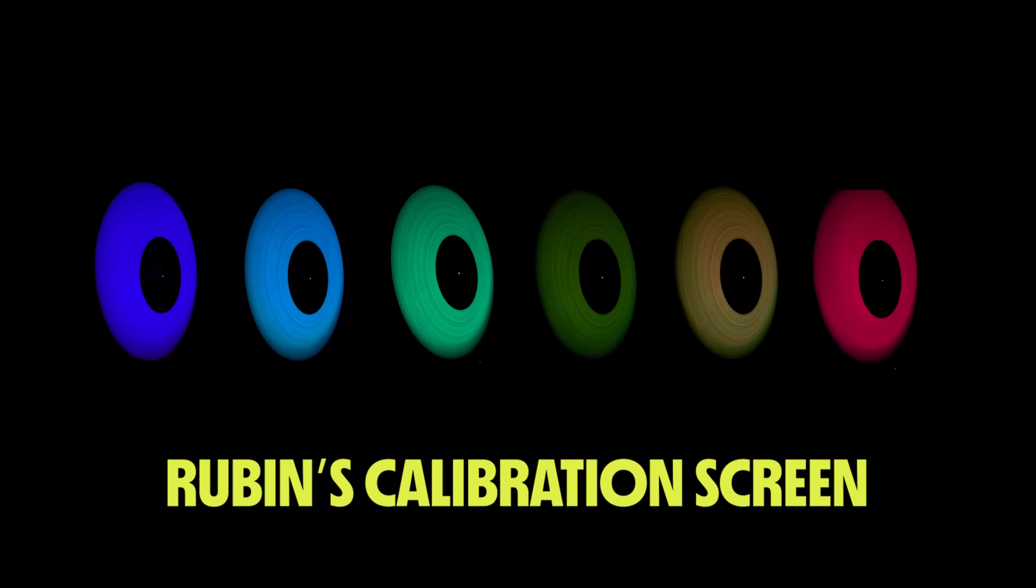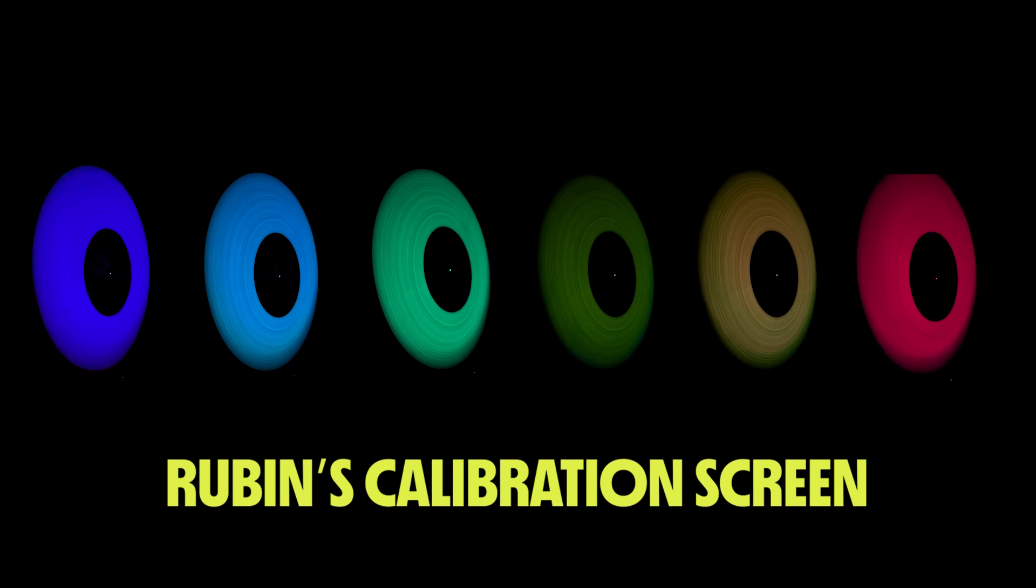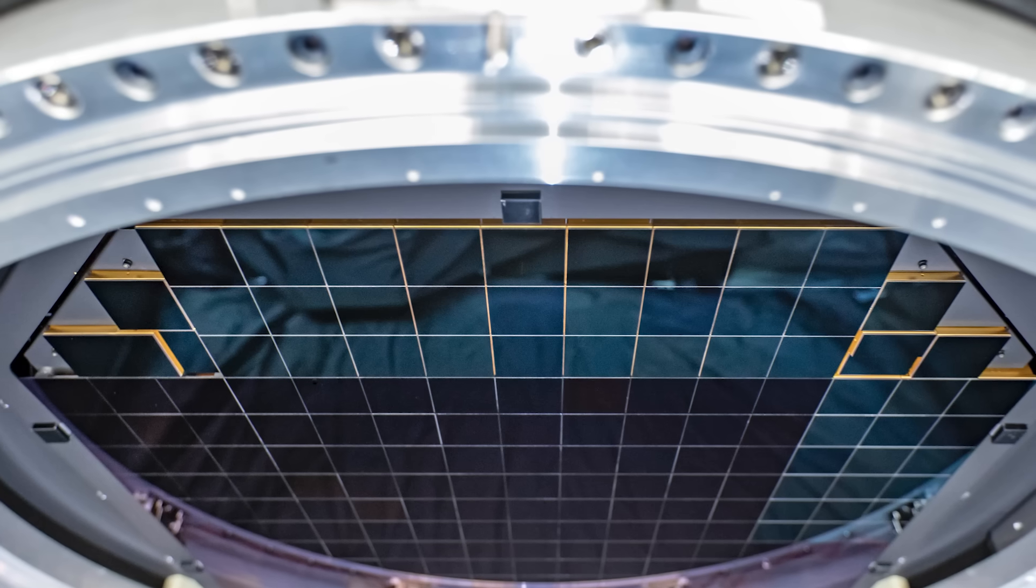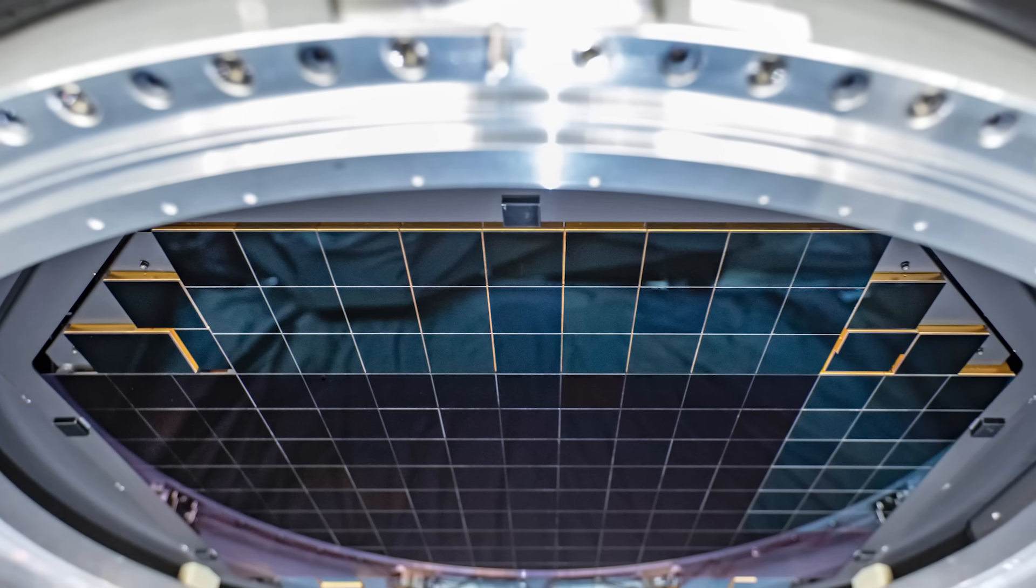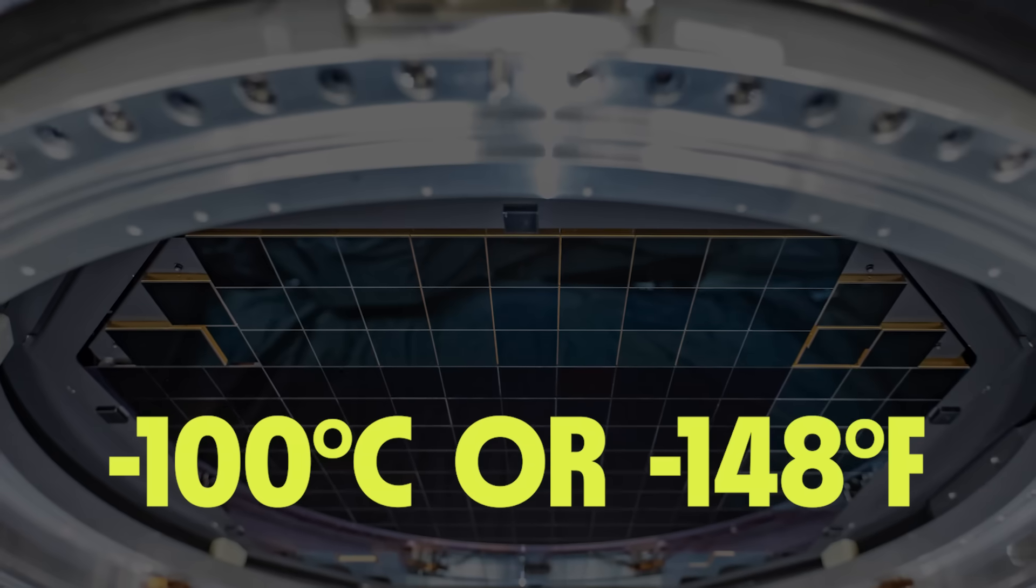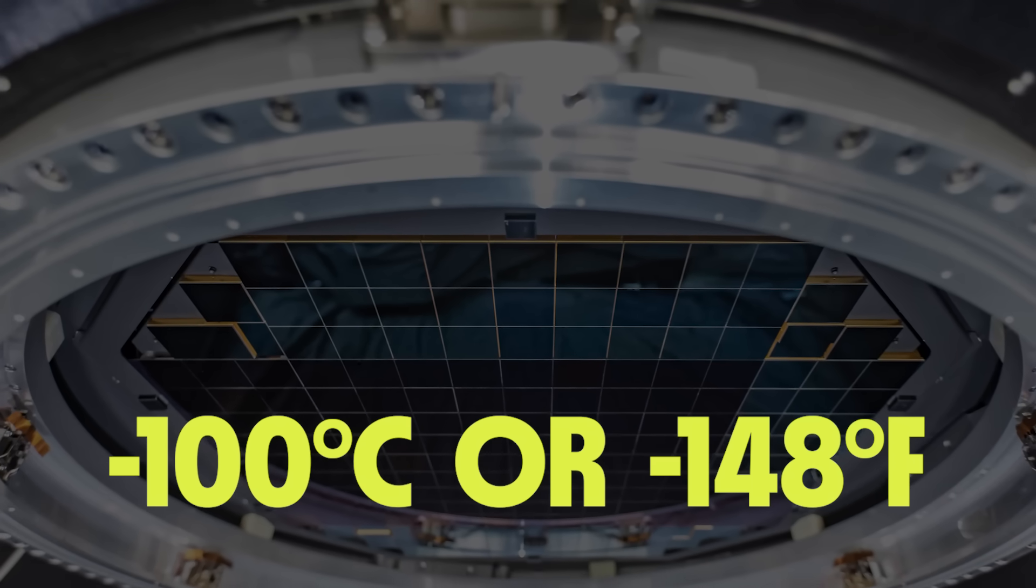The observatory uses these special LED lights to constantly recalibrate the mirror alignment and correct for any small variations that might emerge over time. But this camera needs more than just lenses and filters to see what it sees. The image sensor has to be kept incredibly cold to work. We are talking temperatures near minus 100 degrees Celsius. Without the cryogenic chill, much of the data would be drowned in thermal noise.